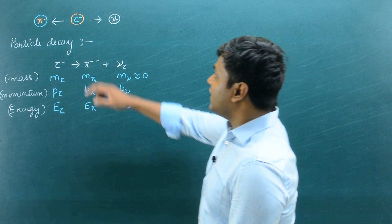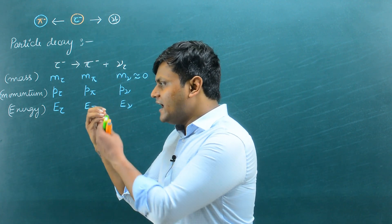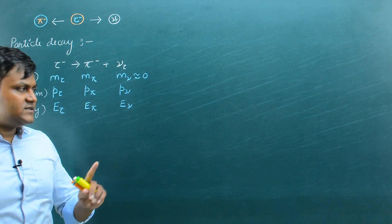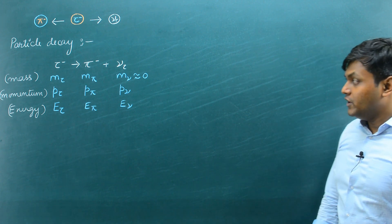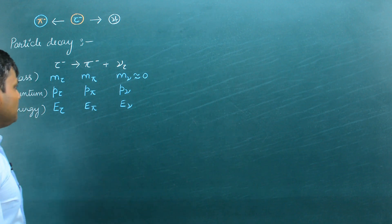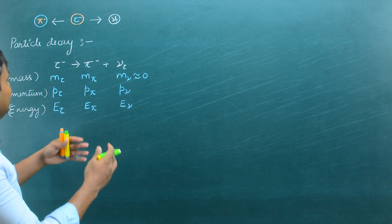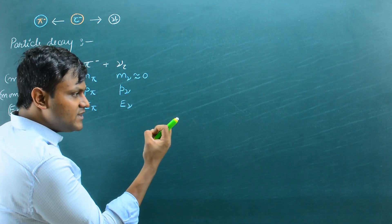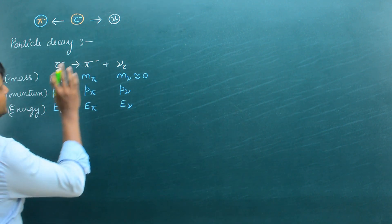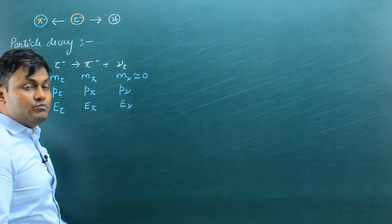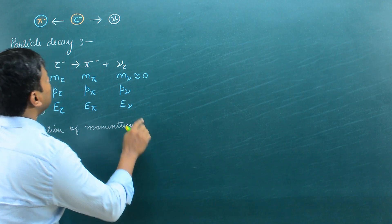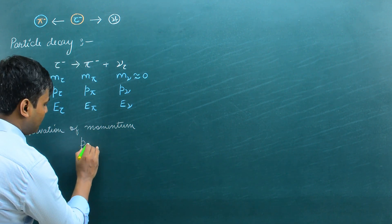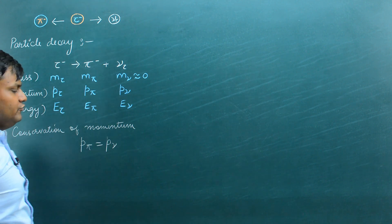Since this is a decay process in the rest frame of the tau particle, originally there was a tau particle that suddenly decayed into two separate particles — a pi meson and a neutrino. We can apply conservation of relativistic linear momentum and conservation of relativistic energy to solve this problem. In the rest frame of the tau particle, conservation of relativistic momentum gives us that the momentum of the pi meson and the momentum of the neutrino are exactly equal: p_pi equals p_nu. We'll keep this as point number one.